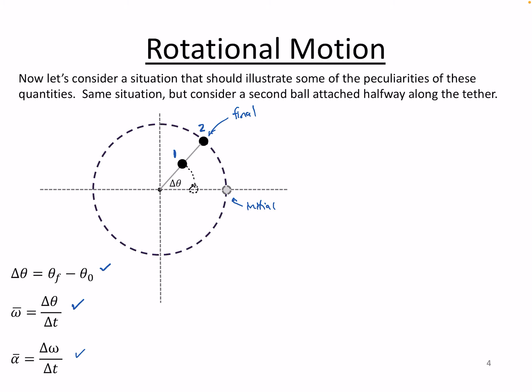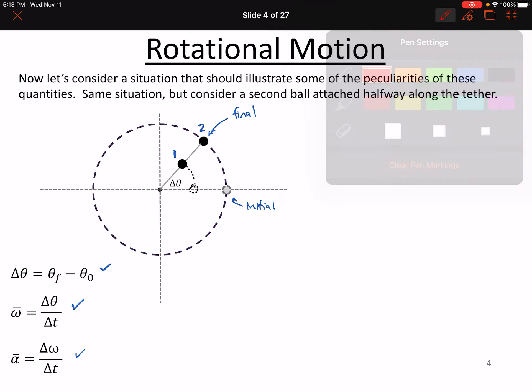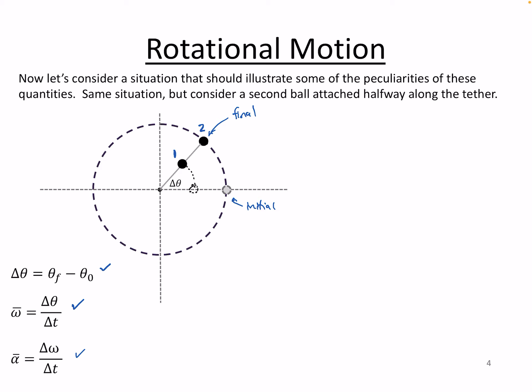I think if you looked at that, you would agree that both of those balls on a tether have traced out the same delta theta during that little snippet of time that we're considering where they go from initial to final. If you look at ball number one in isolation, you would have the string tracing out that angle. And ball number two also, since it's attached to the same string, traces out that same angle. And so the angular displacement is the same for both balls.